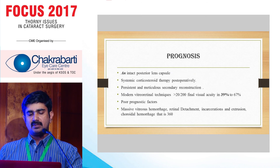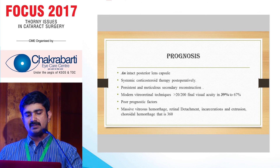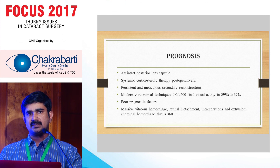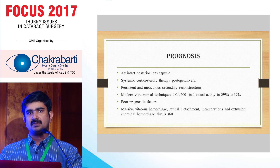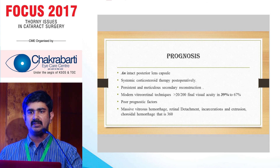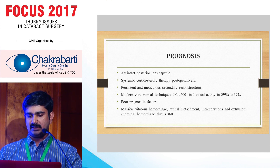Prognosis depends on several factors. Presence of an intact posterior capsule is a good prognostic indicator. Use of systemic steroids and meticulous secondary reconstruction — including RD surgeries and corneal transplant — improve prognosis. With modern vitreoretinal techniques, various studies have shown 39% to 67% of patients achieving visual acuity better than 20/200. Poor prognostic factors are massive vitreous hemorrhage, retinal detachment, incarceration of the retina in the wound, and large suprachoroidal hemorrhages extending 360 degrees.